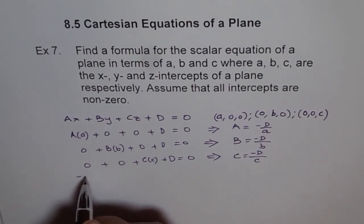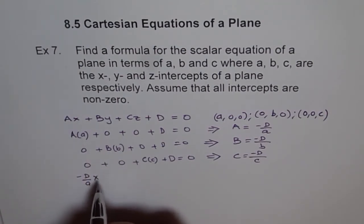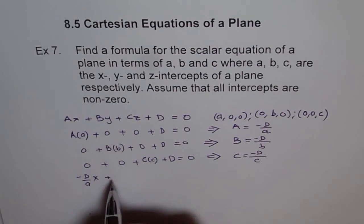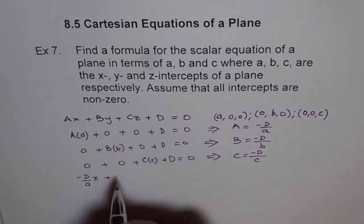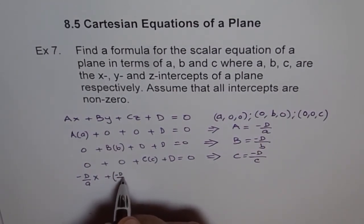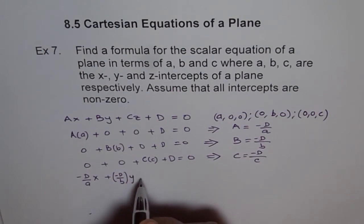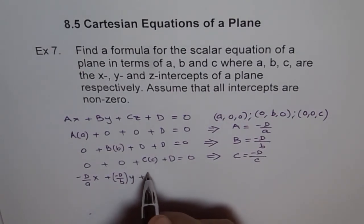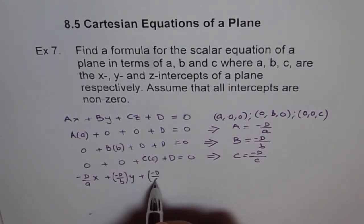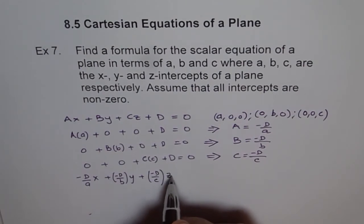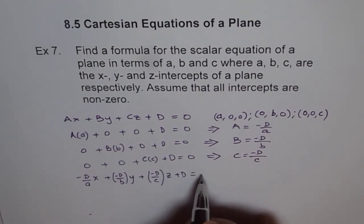So once we do that, we get minus D over A times X, right? Plus, let me write minus D over B in bracket, minus D over B times Y plus minus D over C times Z plus D equals to 0.